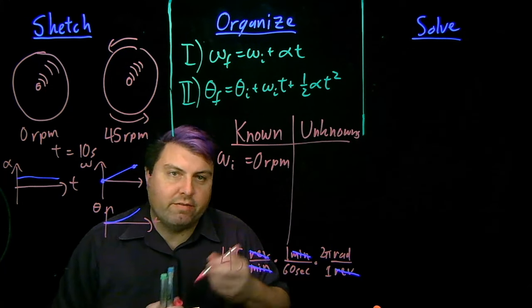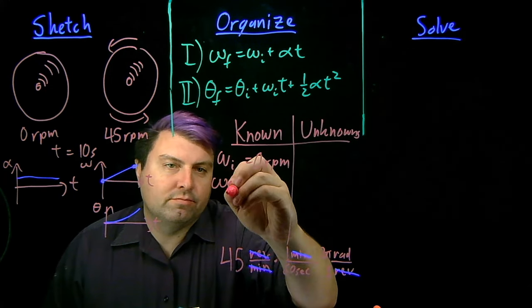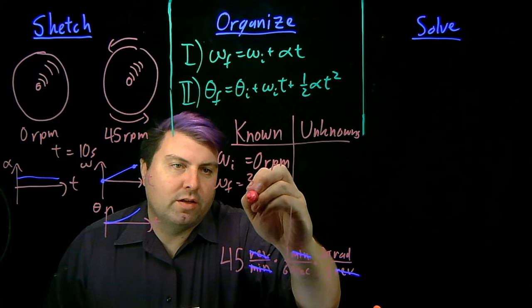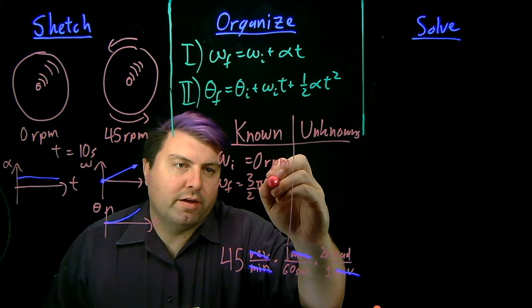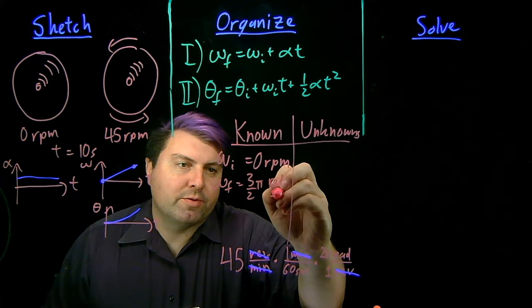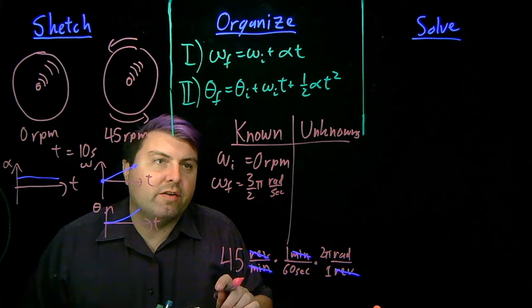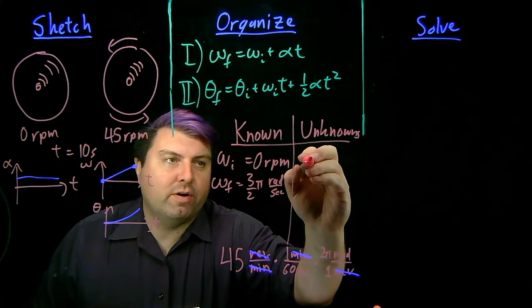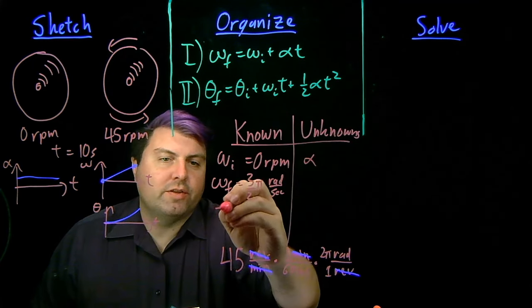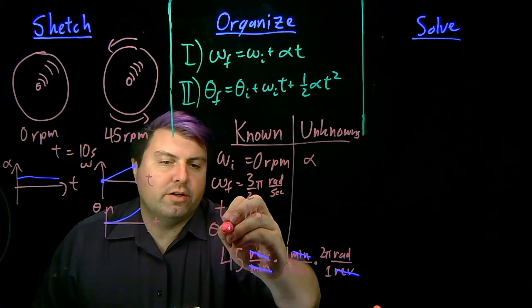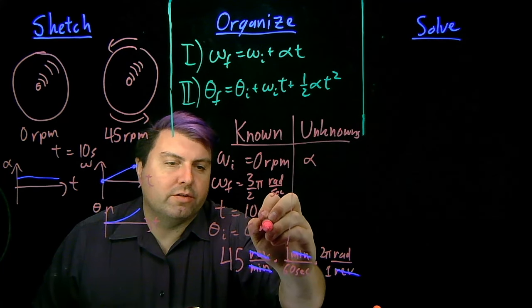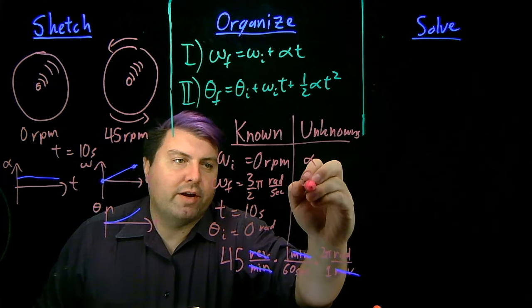So we can say that our omega final is 3 over 2 pi radians per second. So then we are going to find out what alpha is. We know the time is 10 seconds. We know our initial position is zero radians. And we want to find our final position.